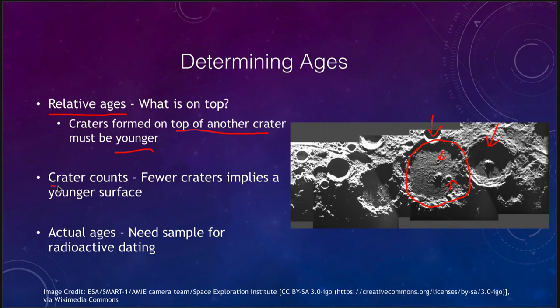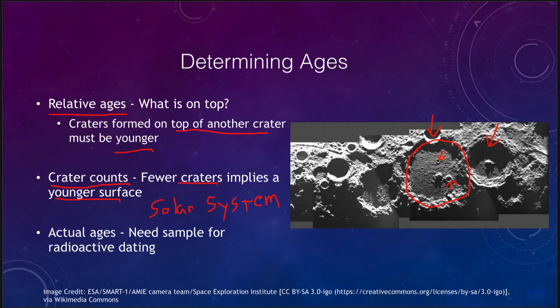We can also use crater counts to estimate ages. Fewer craters means a younger surface, and we can use this across the solar system. This doesn't work just on the moon or the earth — we can look at other planetary surfaces and moons of other planets and use the number of craters on them. When we see a lot of craters we know it's a very old surface; when we see very few craters we know it's been reworked relatively recently.